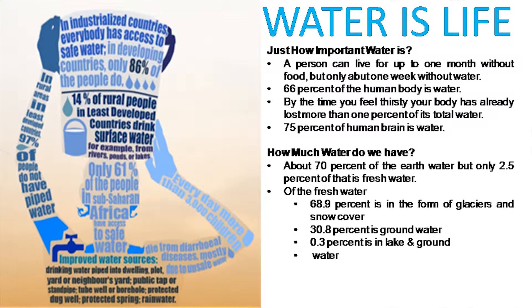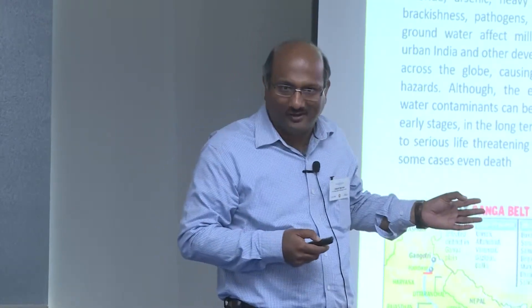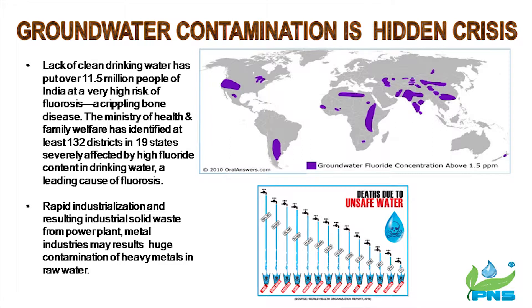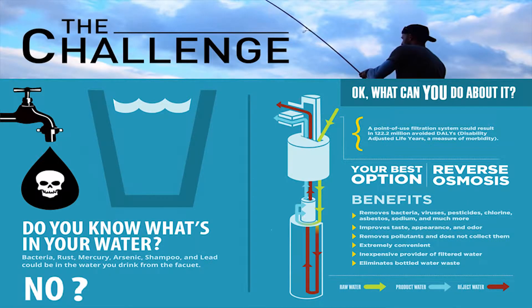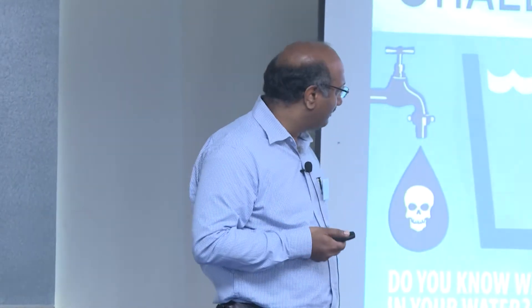What is life? Only 2.5 percent of total water on earth is fresh water. Contamination is a hidden crisis — fluoride, arsenic, heavy metals, nitrate, pathogens, bacteria. Groundwater is linked to the highest rate of death due to unsafe water in India. Most people don't know what's in their water, so the best option is to go for reverse osmosis, as it removes all bacteria, heavy metals, and toxics.